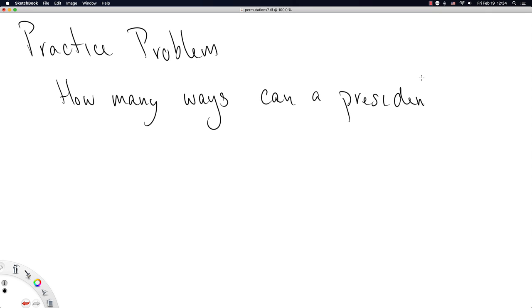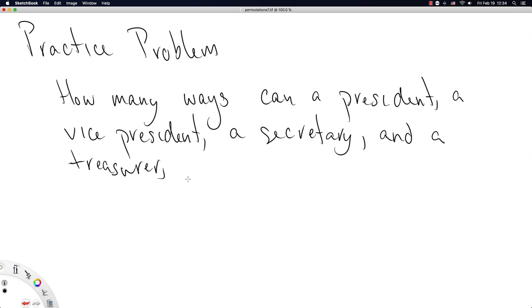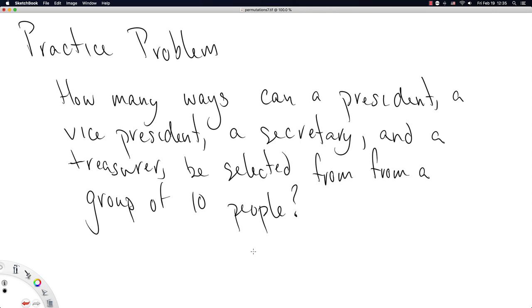I'll just give you a practice problem then. The practice problem is: How many ways can a president, a vice president, a secretary, and a treasurer be selected from a group of 10 people? I'll let you answer that one on your own.